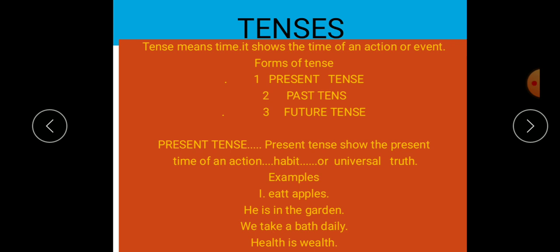Abhi, isi waqt ho raha hai. I eat apples, abhi ho raha hai yeh kaam. I eat mangoes. He eats his breakfast. Man is mortal. The moon sets in the west.